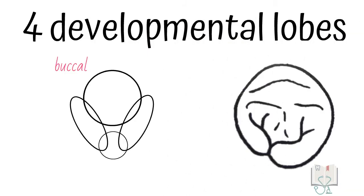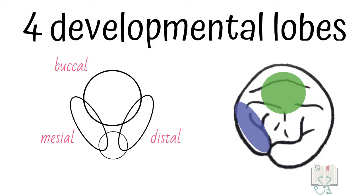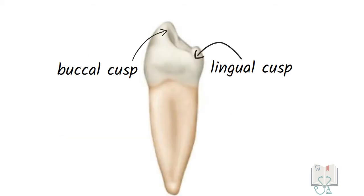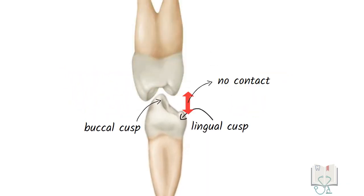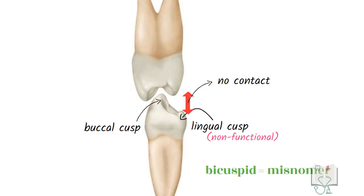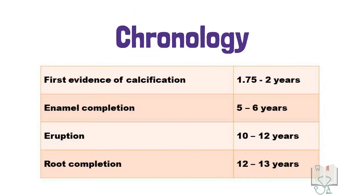The tooth develops from four developmental lobes: the buccal lobe forms the buccal cusp, the mesial lobe forms the mesial marginal ridge, the distal lobe forms the distal marginal ridge, and the lingual lobe forms the lingual cusp. The lingual lobe is very poorly developed, making the lingual cusp very small and unable to contact the opposite arch, rendering it non-functional. Hence, the term 'bicuspid' becomes a misnomer for the mandibular first premolar, as there is only one functional cusp.